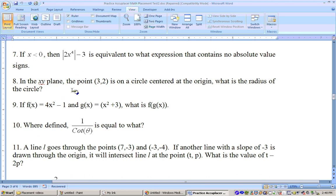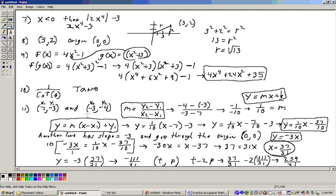On problem 8, it says the point (3,2) is on a circle centered at the origin. What is the radius of that circle? Well, let's take a look at this problem. And like I said, the answer to the last problem is just 2x to the 4th minus 3. But this problem, we have a point at (3,2). The origin, when they say that, that's the point (0,0). So the point (3,2) means 3 over to the right and 2 up.